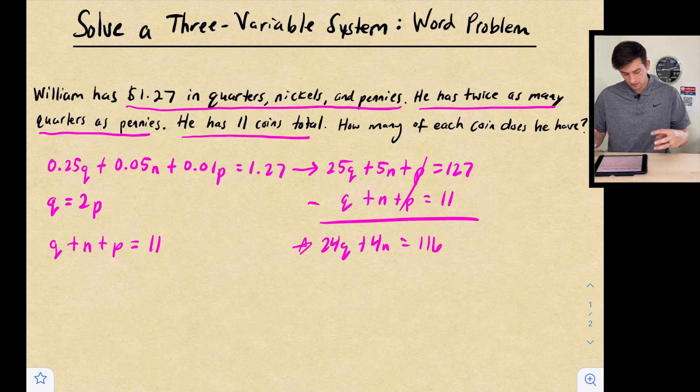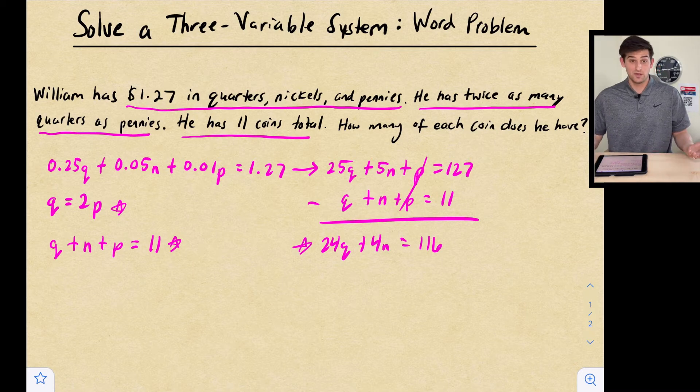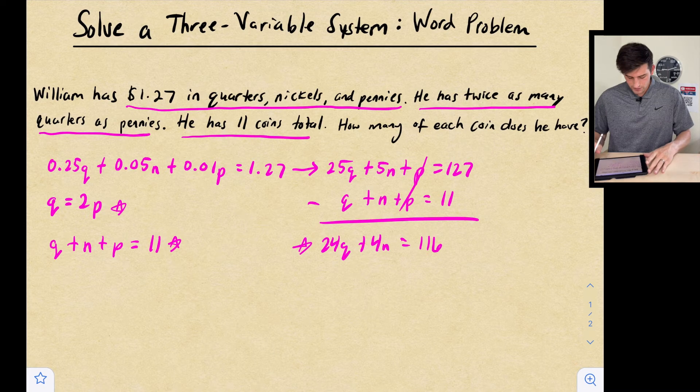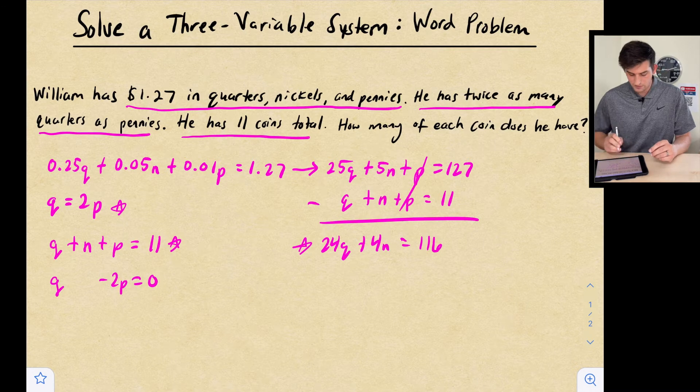So now what we need to do is go back and use our two equations that we haven't used yet, or the one equation, Q equals 2P. And we need to eliminate P. So what we're going to do is take Q equals 2P, and I'm going to write it like this: Q minus 2P equals zero. So all I did was I subtracted 2P to go over to the left side.